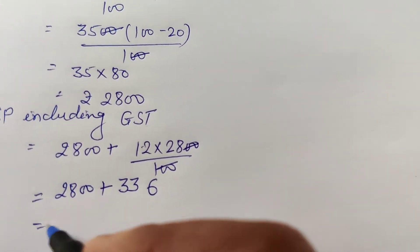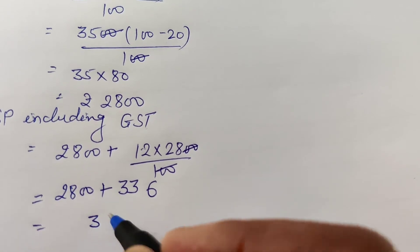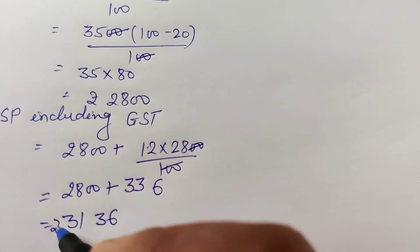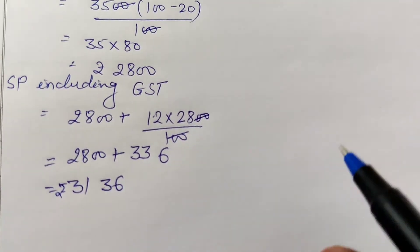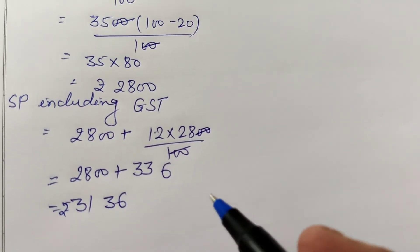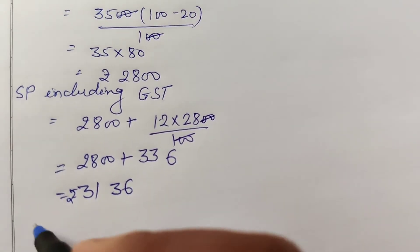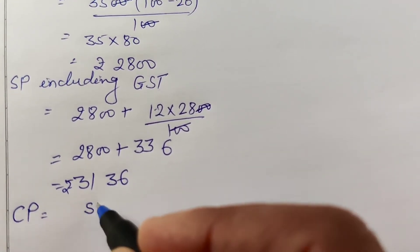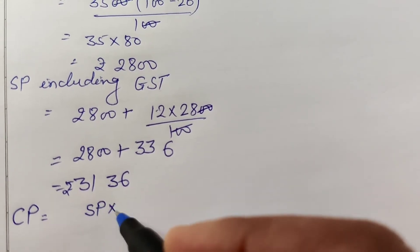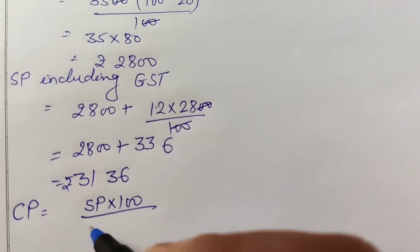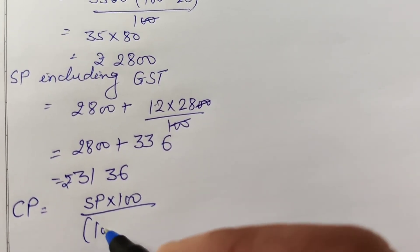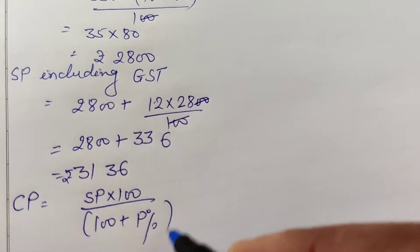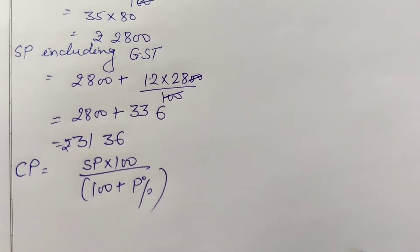Calculating: 2800 plus 12 into 2800 divided by 100 gives us 2800 plus 336, which equals rupees 3136. So the selling price including GST is rupees 3136. Now we find the cost price.